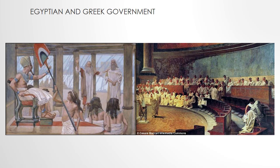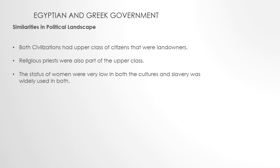One of the first things about these two cultures I would like to explore is their government. There were similarities in the political landscape: both civilizations had an upper class of citizens who were landowners, religious priests were part of their upper class, and both civilizations relied on peasants and slaves to do the labor to keep their land worked. Both civilizations were also big into scientific and astronomy and mathematics studies, and religious priests had a great say in the political happenings of the time in both civilizations.